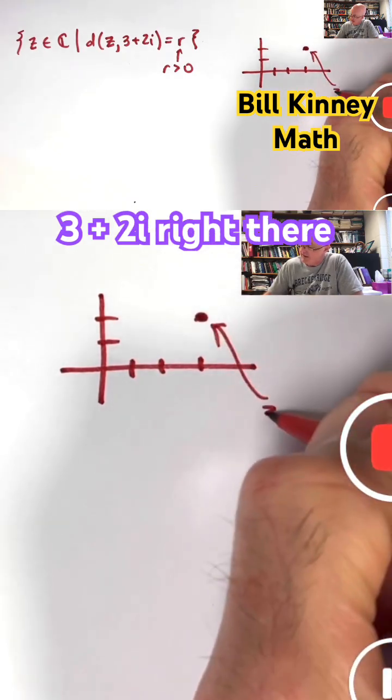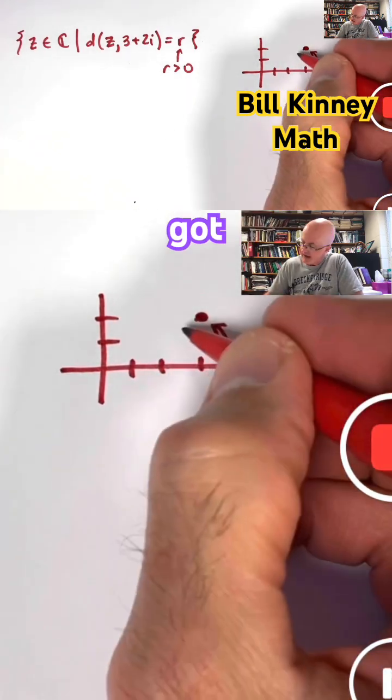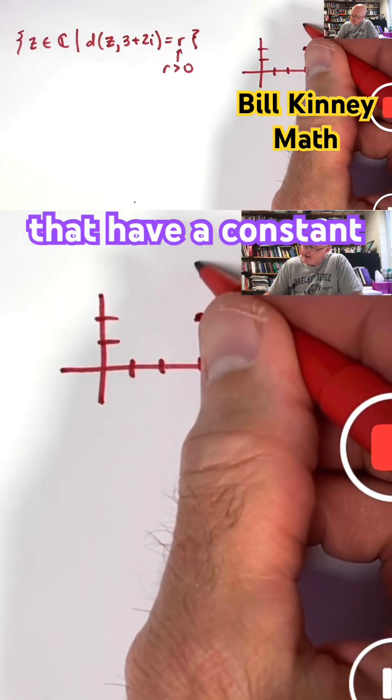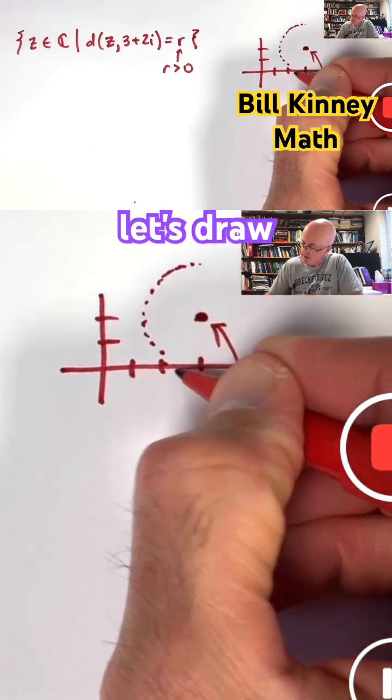There's 3 plus 2i right there. Got all the points in the complex plane that have a constant distance of R. Let's draw a circle